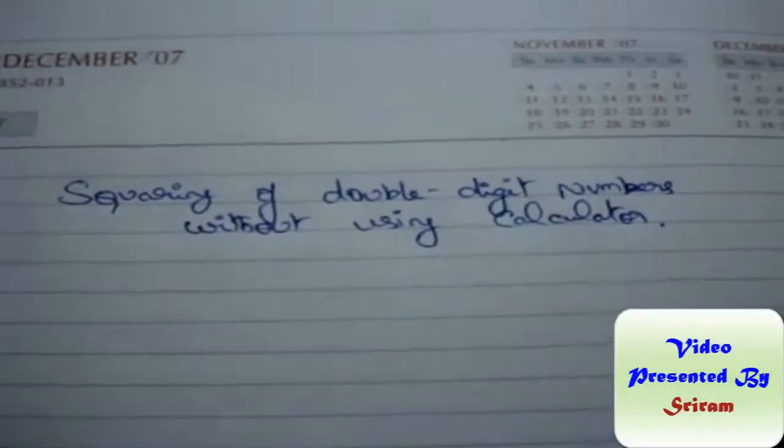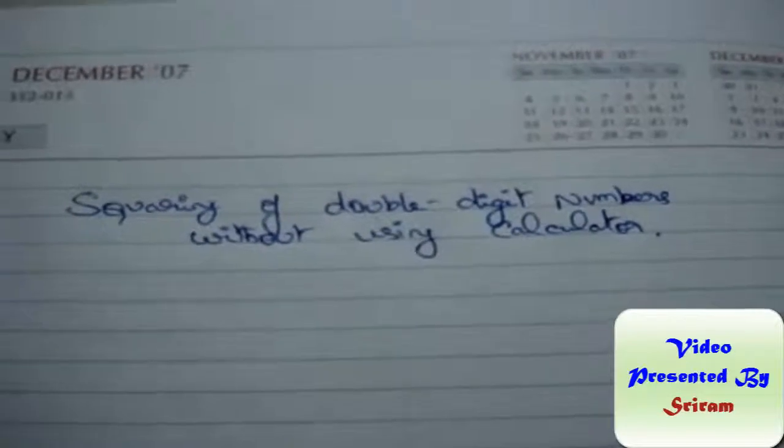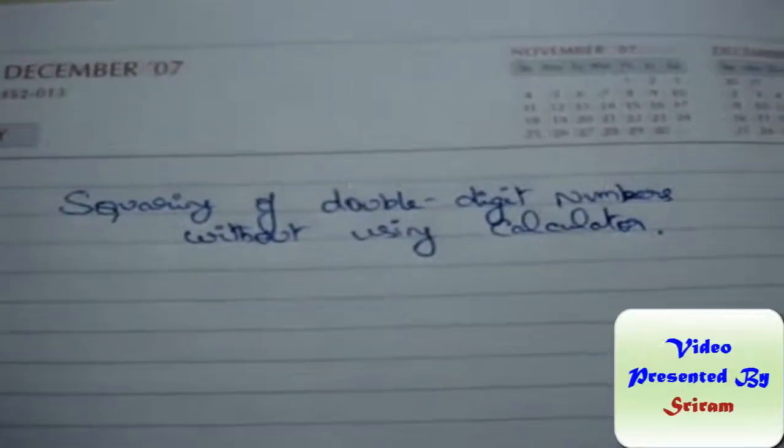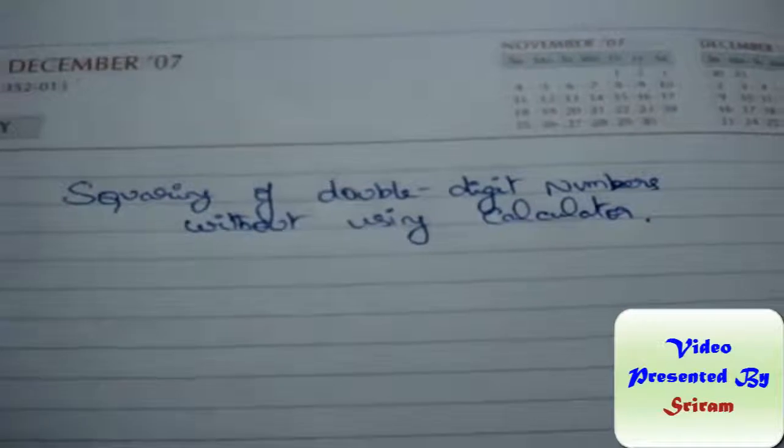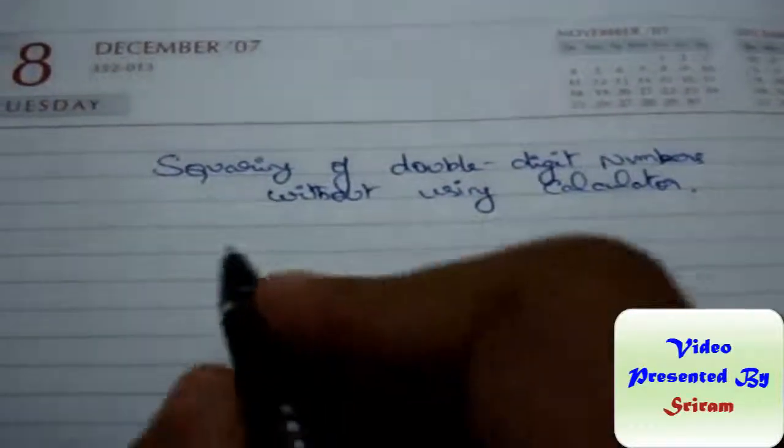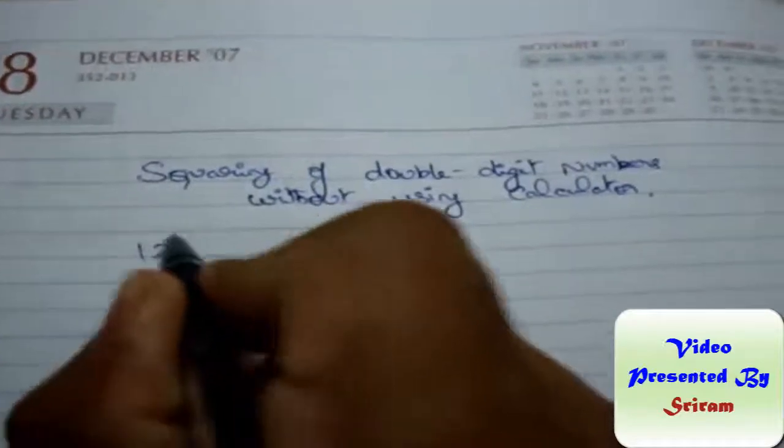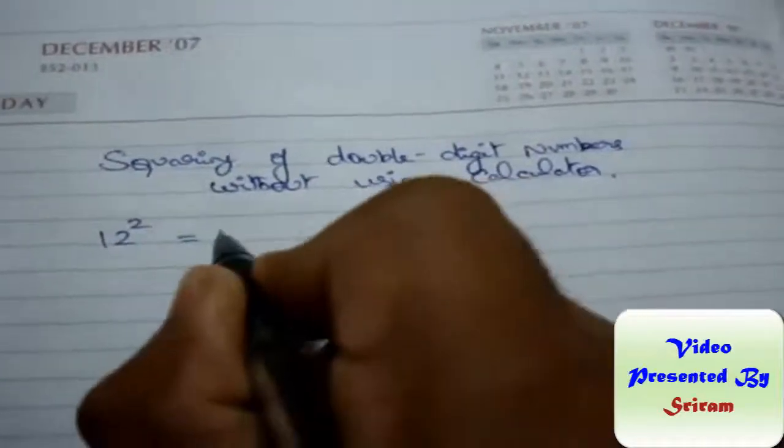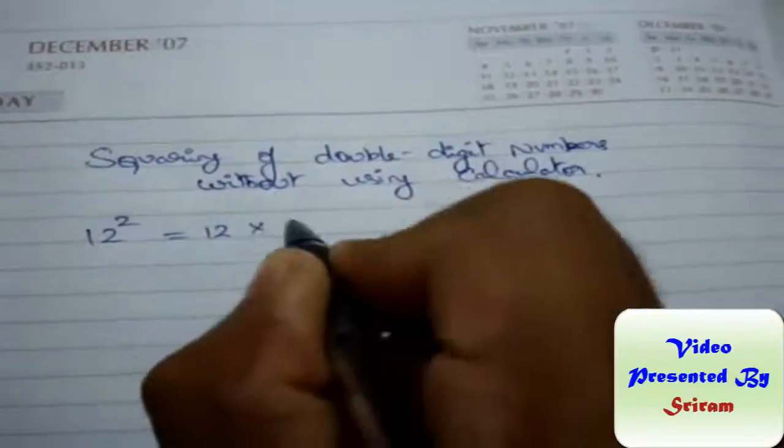Good day everybody. Now we're going to see squaring of a double digit number without using a calculator. It's very simple. Let's, for example, take 12 squared. We know that 12 squared is 12 times 12, that is equal to 144.